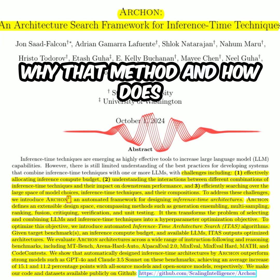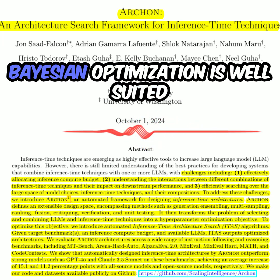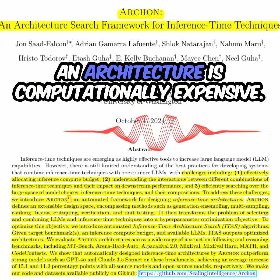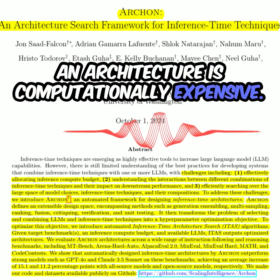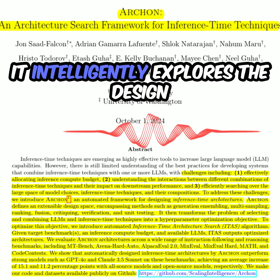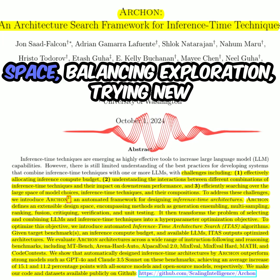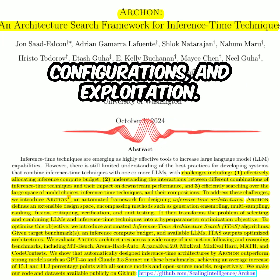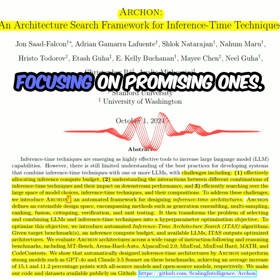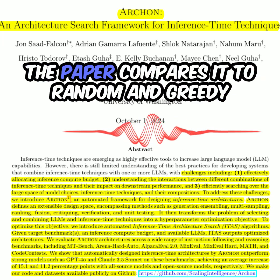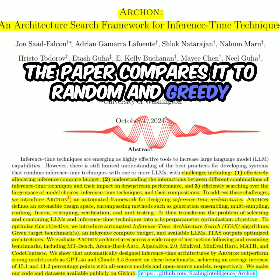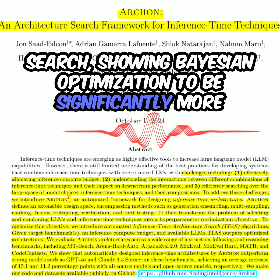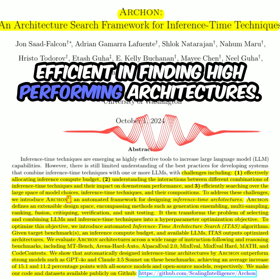The authors use Bayesian optimization for their architecture search. Why that method, and how does it compare to other approaches? Bayesian optimization is well-suited for this problem because evaluating an architecture is computationally expensive. It intelligently explores the design space, balancing exploration — trying new configurations — and exploitation — focusing on promising ones. The paper compares it to random and greedy search, showing Bayesian optimization to be significantly more efficient in finding high-performing architectures.